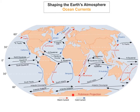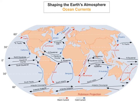The blue ones are cold currents — such as the Canary, Greenland, California, Peru, and so on. So you've got the warm currents and you've got the cold currents. On a map, if it shows you colour, you know that red is the warm current and blue is the cold current.